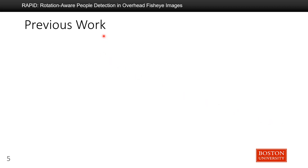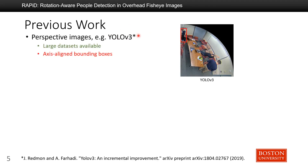There are several existing algorithms on this problem. First, we could directly apply object detection algorithms designed for perspective images, for example YOLO version 3. There are large datasets available for these algorithms, but they produce axis-aligned bounding boxes and typically miss non-upright people.